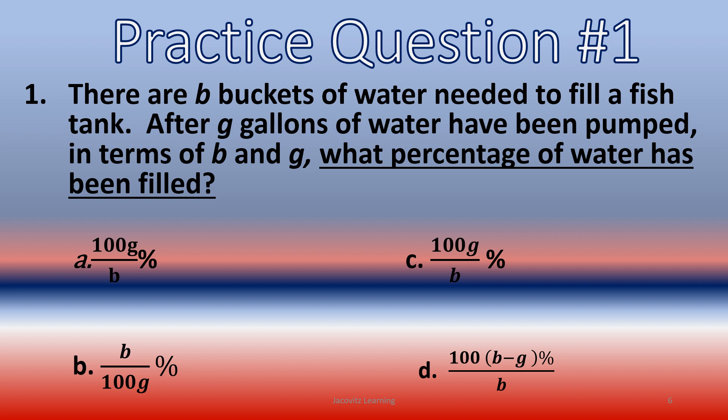Practice question number one. Let's go right to it. There are B buckets of water needed to fill a fish tank. After G gallons of water have been pumped, in terms of B and G, what percentage of water has been filled? Here the question is right at you: What percentage of water has been filled? And please do not look for what's actually supposed to go in the total tank. Look at what percentage of water has been filled because you don't have to fill the whole tank. So you have 100G over B percent for question A, B is B over 100G percent, C is 100G over B percent, and D is 100 with your brackets percent times B minus G over B percent.